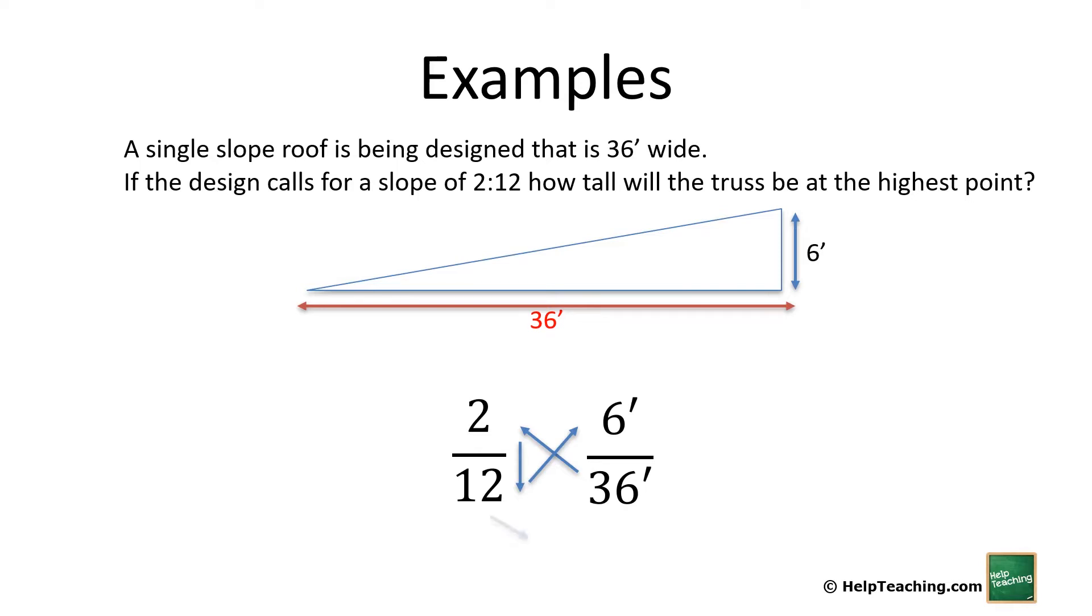Sometimes using factors can be even simpler, so if we know that 12 times 3 is 36, so likewise 2 times 3 is 6, gives us the same answer. Either method is perfectly correct and sometimes one is easier than the other, so feel free to use either method.